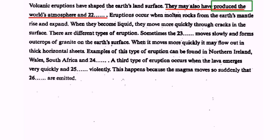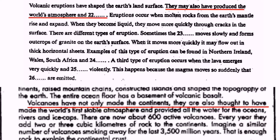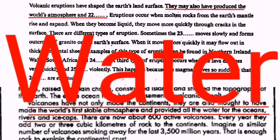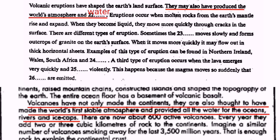The word 'produced' is a keyword, and similar words like 'built' or 'made' carry the same meaning. In the ninth line of paragraph A: 'Volcanoes have not only made the continents, they are also thought to have made the world's first stable atmosphere and provided all the water for oceans, rivers and ice caps.' Atmosphere is already written in the summary, so the other thing volcanic eruptions produced is water. The answer to question 22 is water.